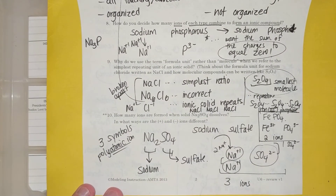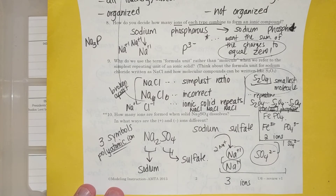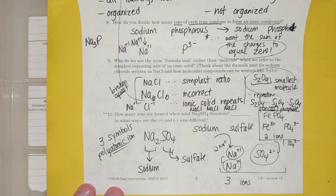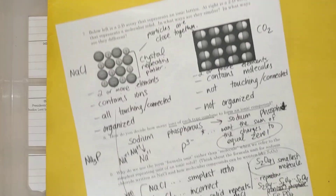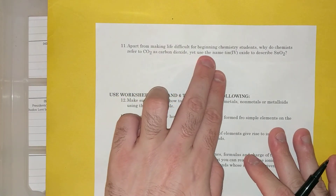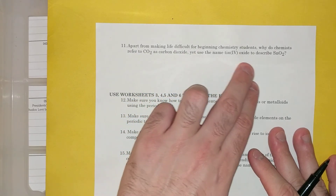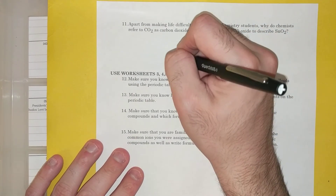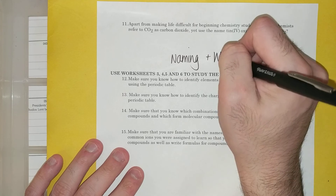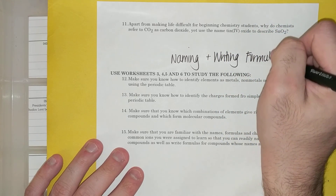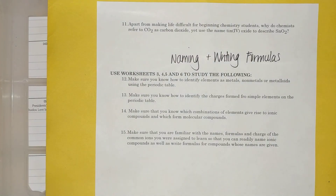I'm going to stop here for the video and answer key for the review sheet. Hopefully this was a crash course on a lot of the material from this unit. You're on your own for answering questions 11 through 15, which cover naming and writing formulas — go back to any worksheets or notes we've done. Hopefully this video was helpful, and you'll get some more studying in with the Kahoot and other practice questions.